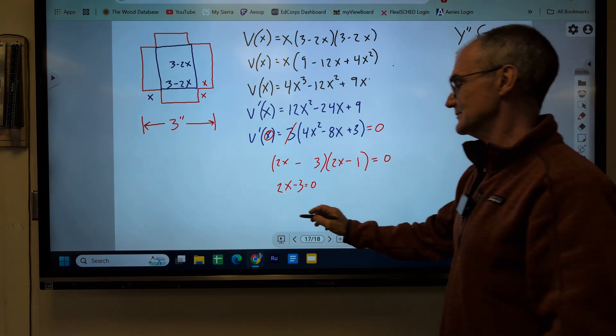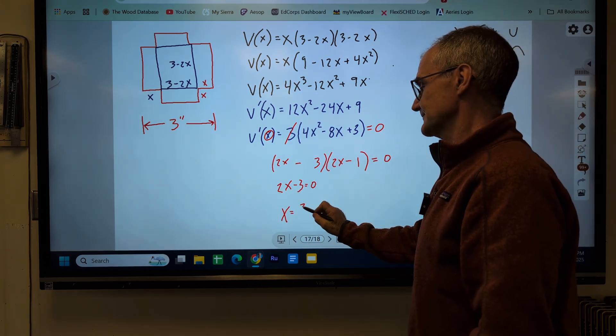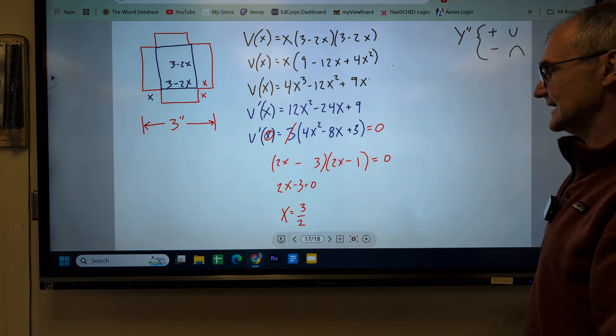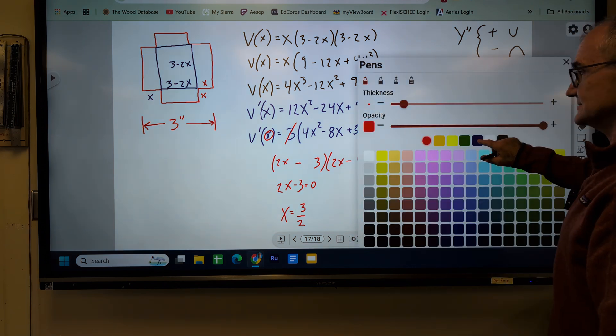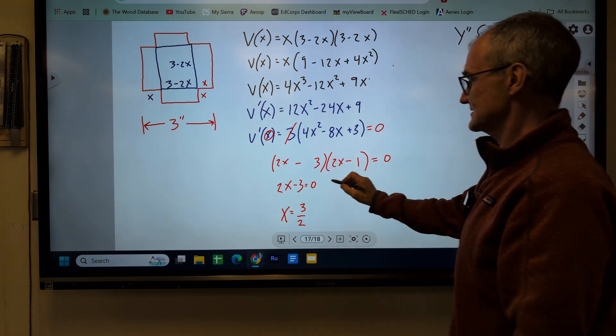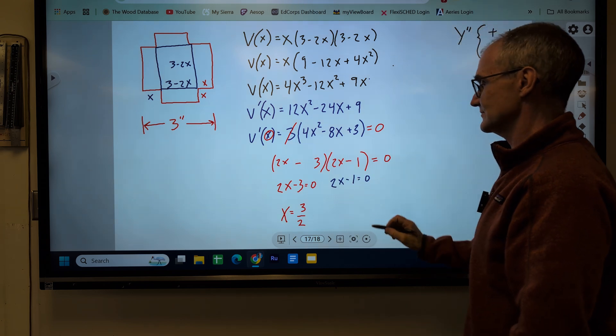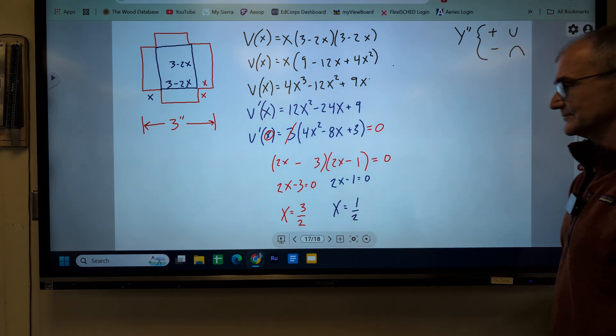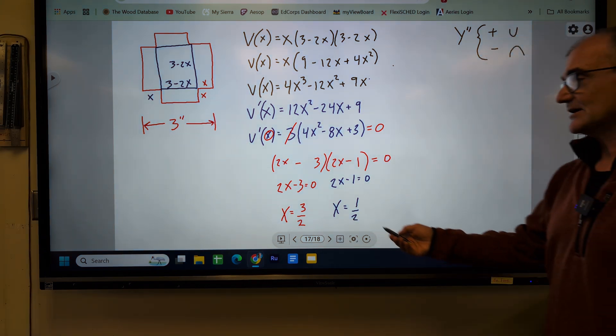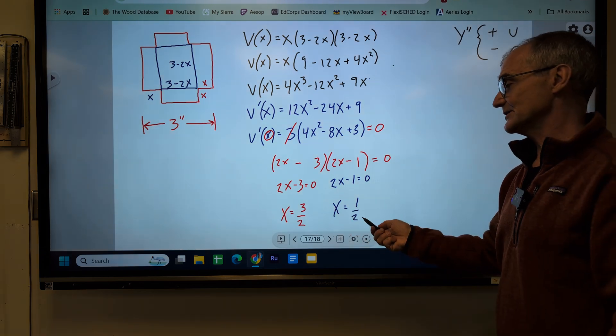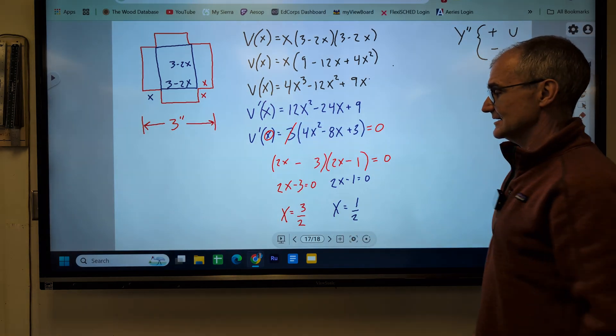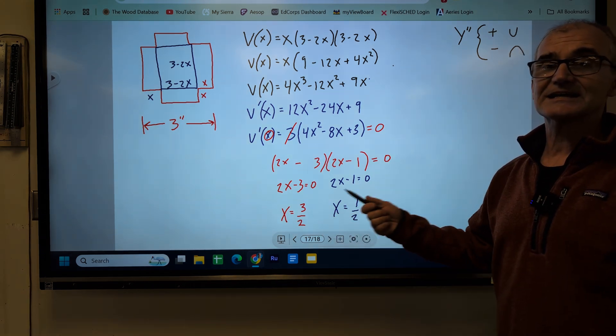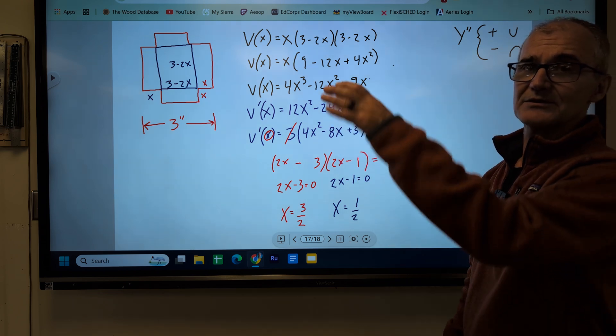Solving for X here, I add 3 to both sides. 2X is equal to 3. Divide both sides by 2. So there's a solution right there, 3 halves or 1 and a half. Then my other solution, we'll go back to blue here, is 2X minus 1 is equal to 0. Add 1 to both sides. 2X is equal to 1. Divide both sides by 2. So I have two solutions. I don't know if they are maximums or minimums. I don't know which one I want to pick. I can take those values and plug them in and realize this one really isn't going to work. But let's use the second derivative to find if it's concave up or concave down.